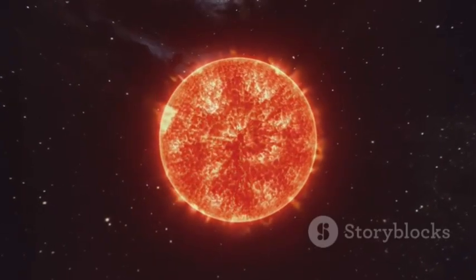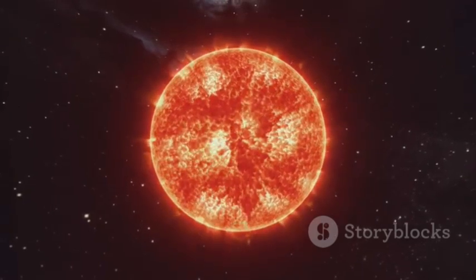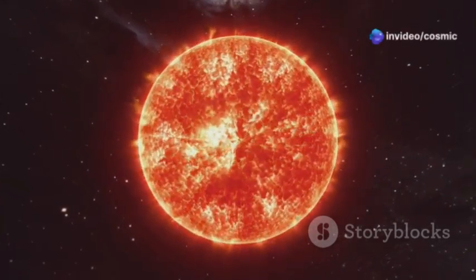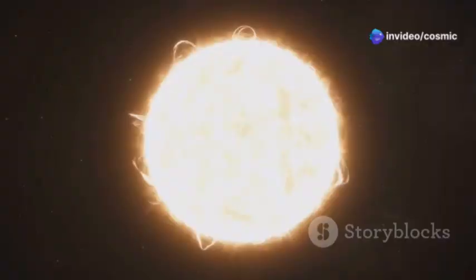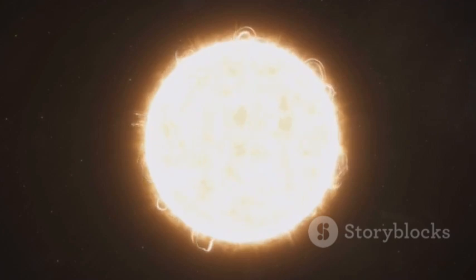If Betelgeuse were placed at the center of our solar system, its outer layers would extend beyond the orbit of Mars, engulfing the inner planets and reaching out into the asteroid belt. In terms of luminosity, Betelgeuse shines brightly, emitting more than 100,000 times the energy of our sun.